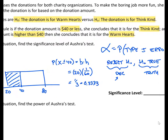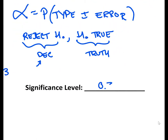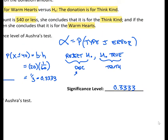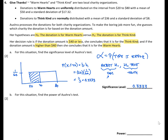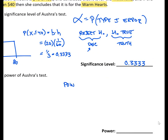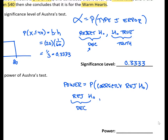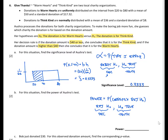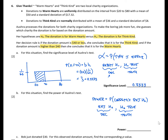That is our final answer for the significance level of the test. Part B says: for this situation, find the power of OSHRA's test. The power equals the probability of correctly rejecting H0. Our decision is to reject H0, and now we're making the right decision — the truth is the alternative hypothesis. So instead of using the null distribution as in Part A, we now use the alternative distribution, which is the distribution for Think Kind.